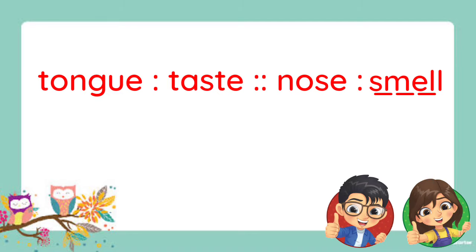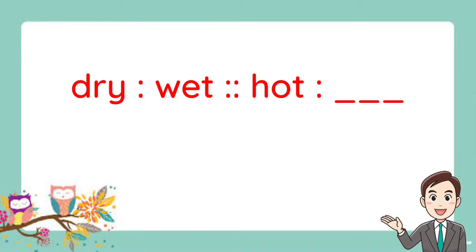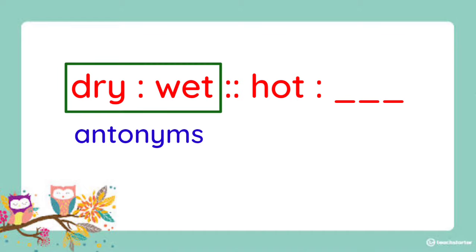Let's have another one. Dry is to wet as hot is to blank. For us to know the correct answer, let us examine first the relationship between the first pair of words — dry and wet. These words are antonyms, or they have opposite meanings, right?